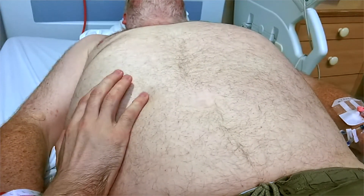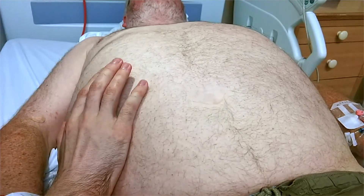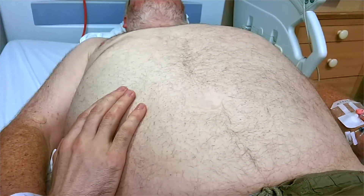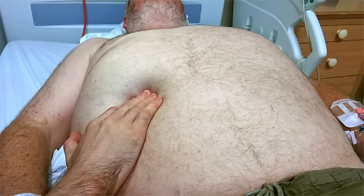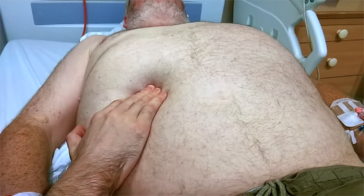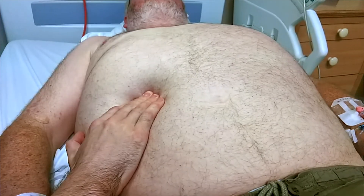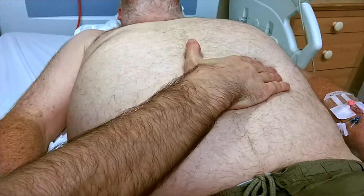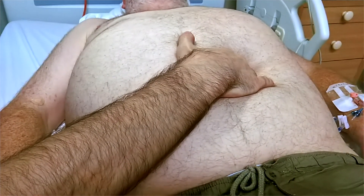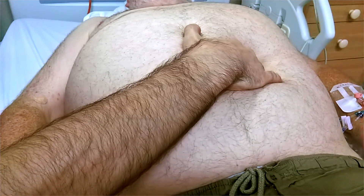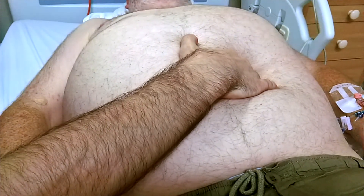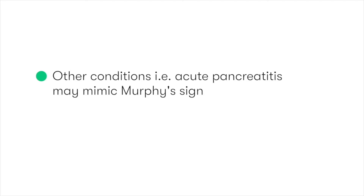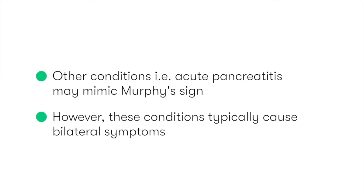However, remember that it's important that we always check for the same sign on the patient's left side, as if they have some significant upper abdominal cause of their inflammation — such as acute pancreatitis or a perforated peptic ulcer — then they may have what looks like a positive Murphy's sign. But it's going to be present on both sides, which won't be the case in acute cholecystitis.